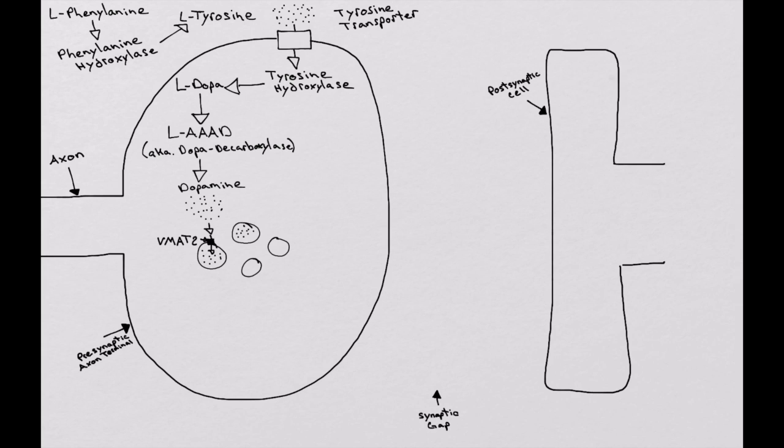And so once we got dopamine inside the cell, this is where it becomes a little different, the physiology does, between the dopaminergic synapse and the noradrenergic synapse. So inside the vesicle of noradrenergic synapse, we have an enzyme called dopamine beta-hydroxylase. And so within the cell, the dopamine is converted by dopamine beta-hydroxylase into norepinephrine.